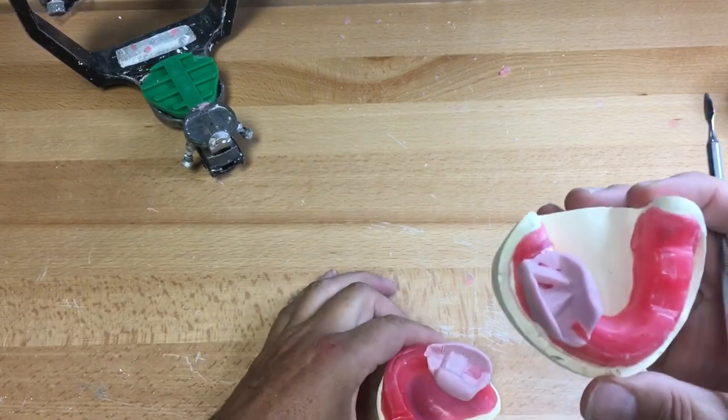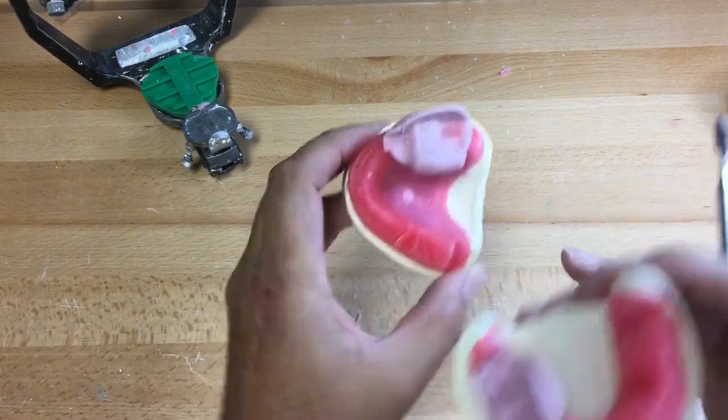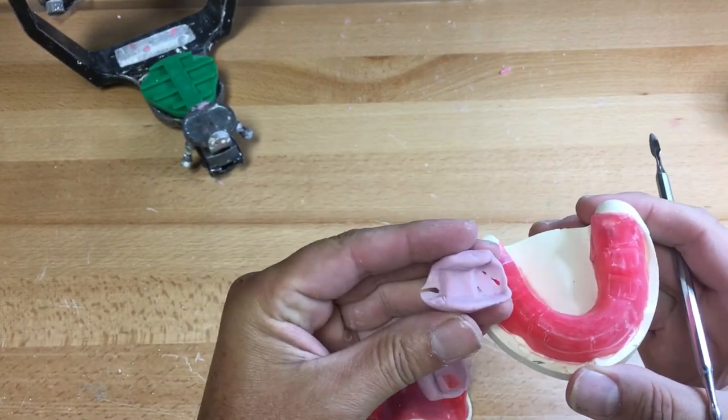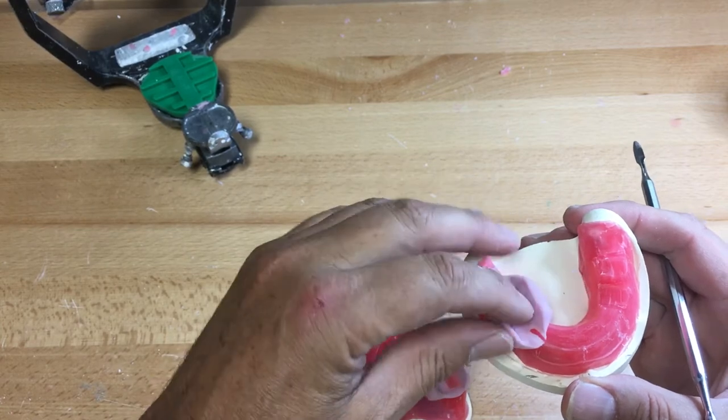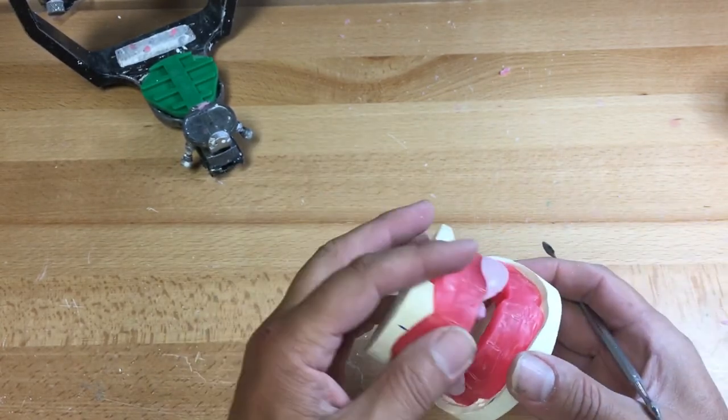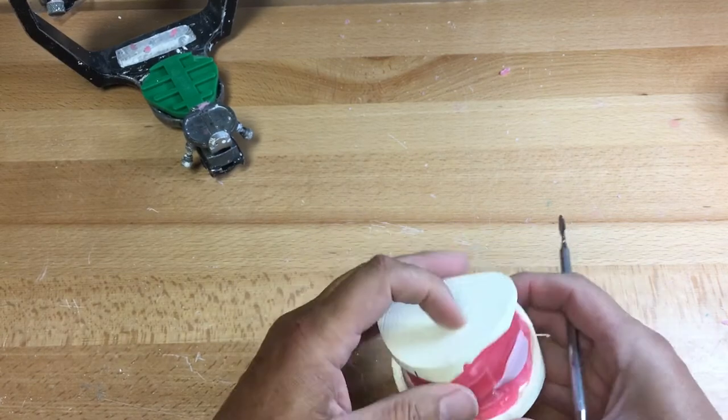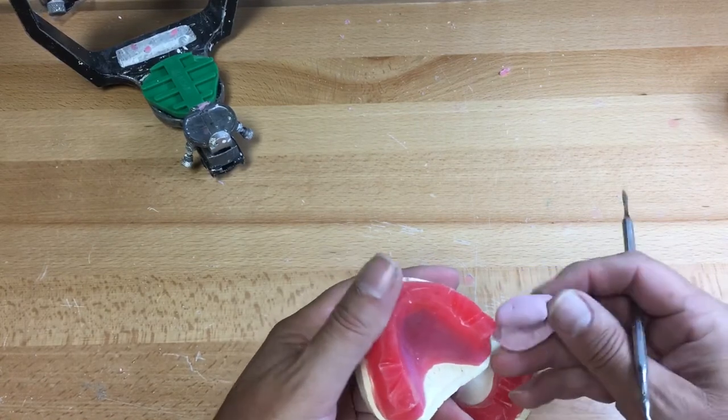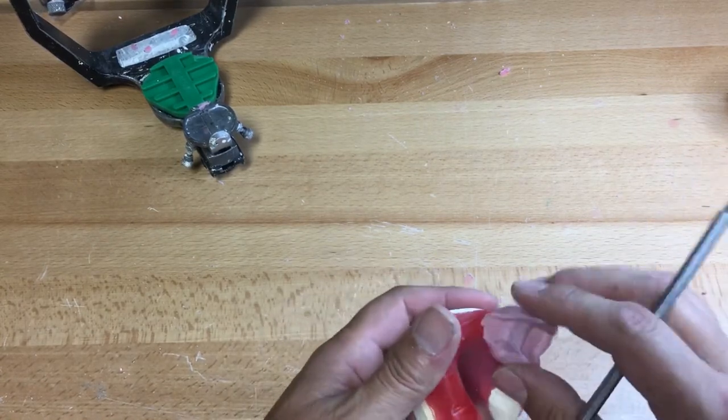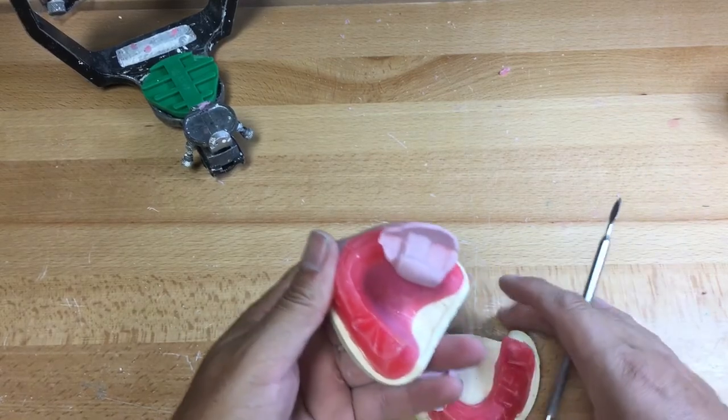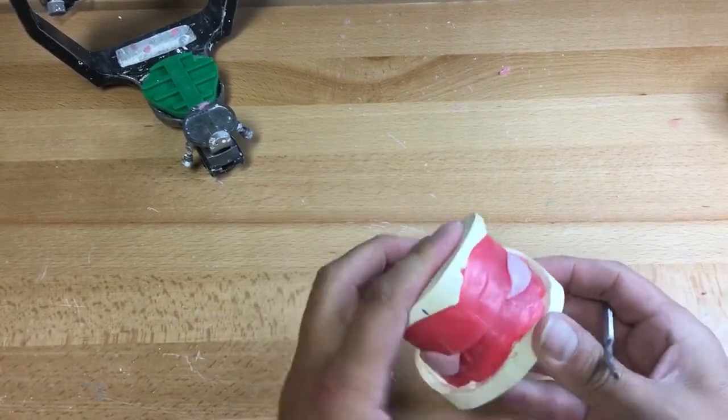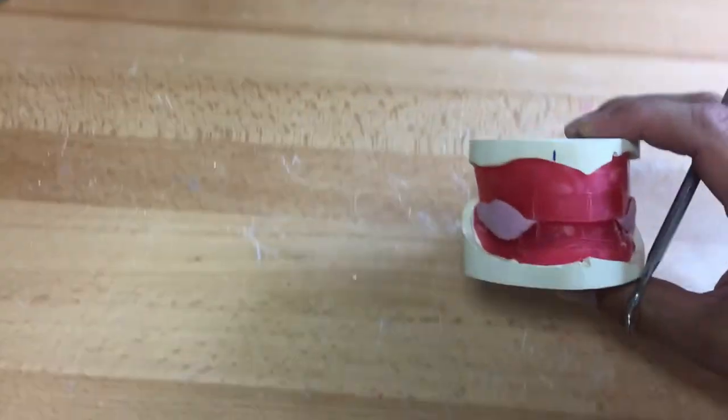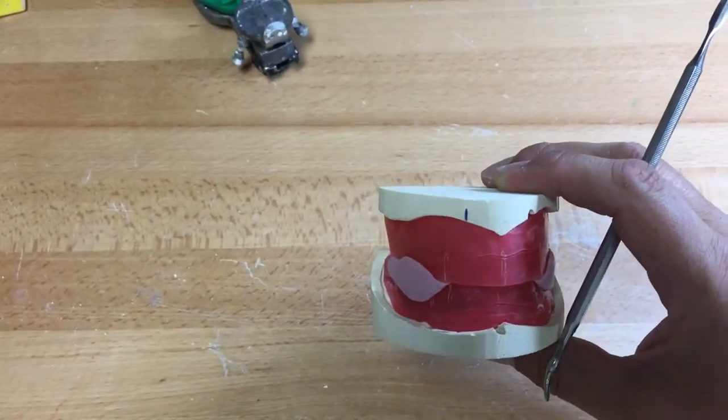As you can see here on my occlusion rims, there's a four millimeter roughly line behind the canine lines. So I'll have the client move their mandible forward until this line meets this line. Then I know they've moved protrusive enough. I don't want it to come all the way around where the condyle will slip outside the articular eminence.